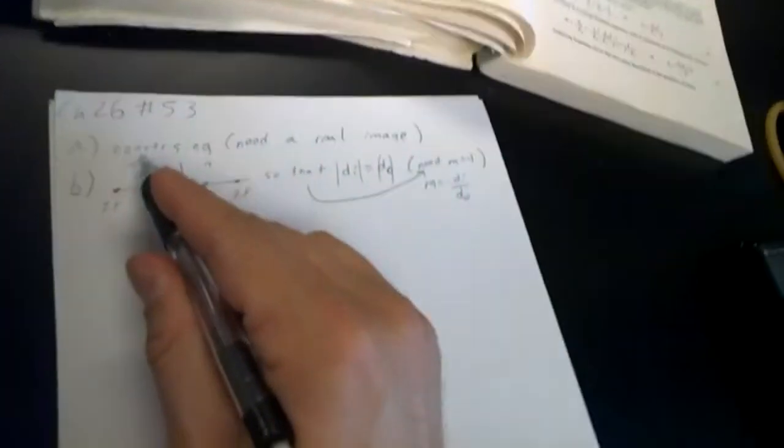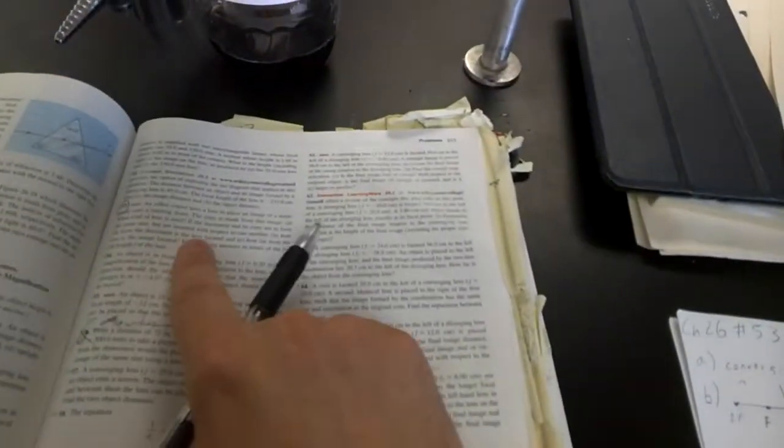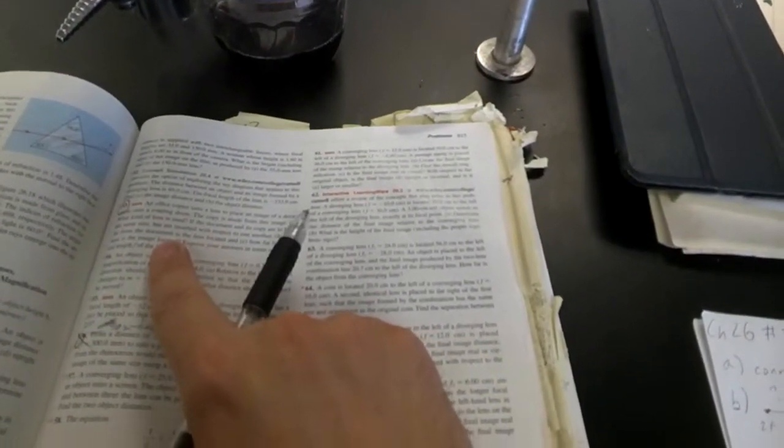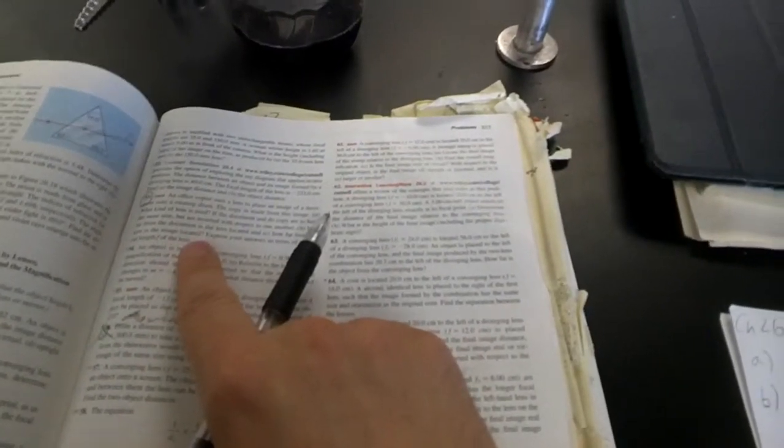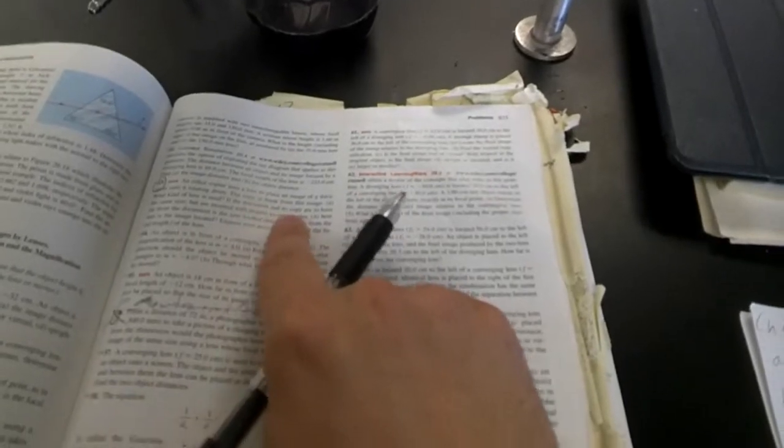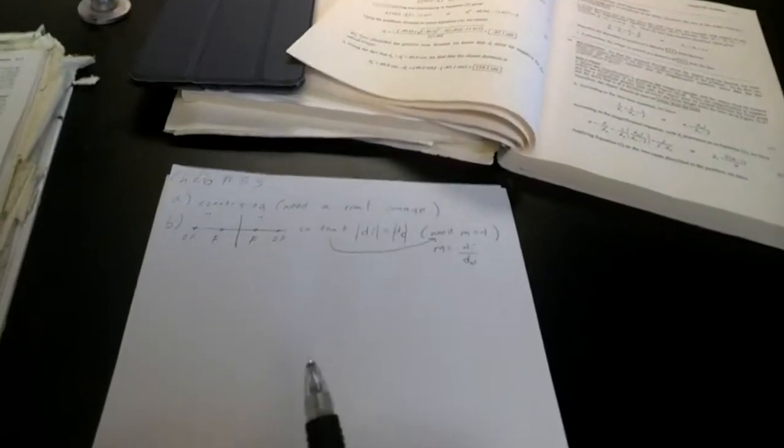Part A done - converging so that we get a real image. Part B says: How far from the document is the lens located? And C: How far from the lens is the image located if the document and its copy have the same size but are inverted with respect to one another? So what that tells me, if they're going to be the same size but upside down, is that our magnification will be negative one.